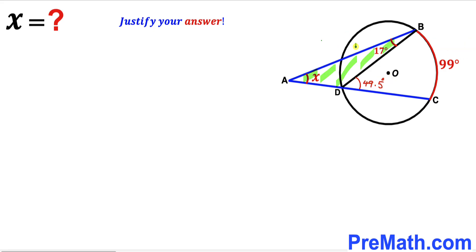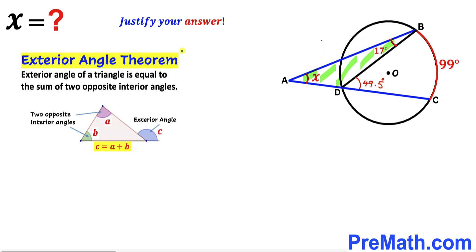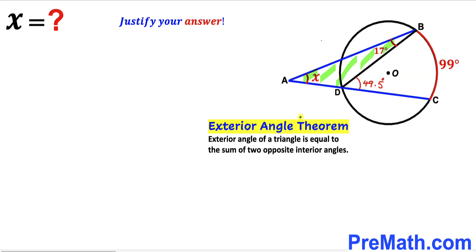Now let's focus on triangle ABD and recall the exterior angle theorem. According to this theorem, the exterior angle of a triangle equals the sum of the two opposite interior angles. We can see that this angle is our exterior angle, while the two other angles are the opposite interior angles. So the exterior angle equals the sum of the two interior angles: angle x plus 17 degrees equals 49.5 degrees.